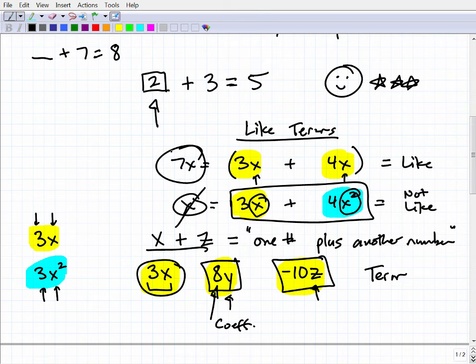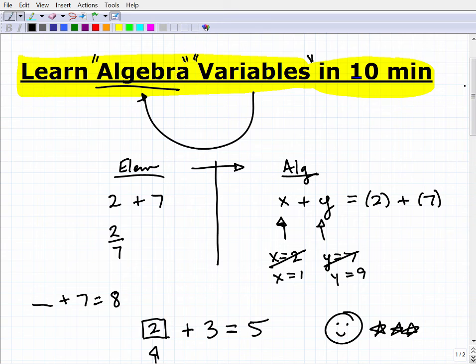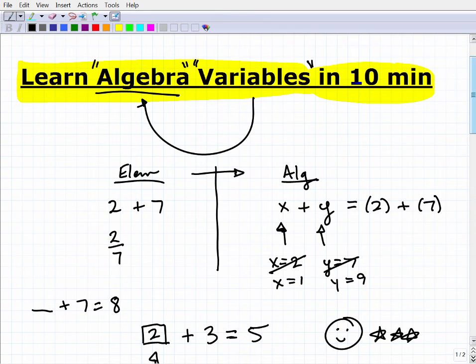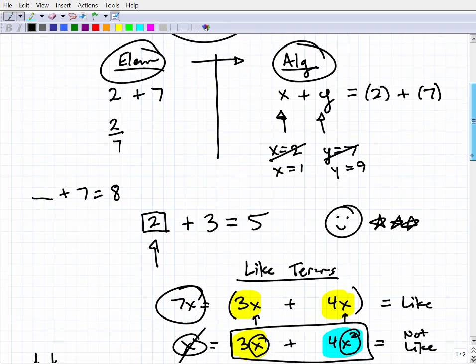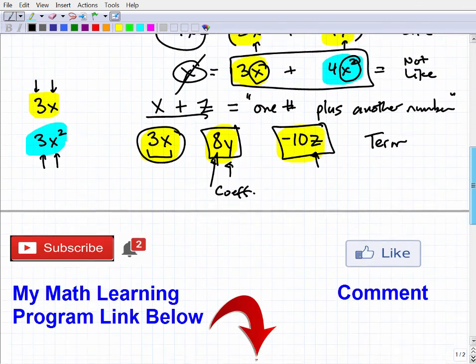I think I'm pretty close to the 10 minute mark, and hopefully you got a decent amount here. Certainly about variables—of course there's a lot more to learn. But you should have a basic definition of what a variable is: it's a placeholder for a number. We also distinguished why we need them, because in algebra we start using variables, and that's different than what we've been doing in elementary school. And then we talked about terms, what they are, and like terms. So I'm going to wrap this up.